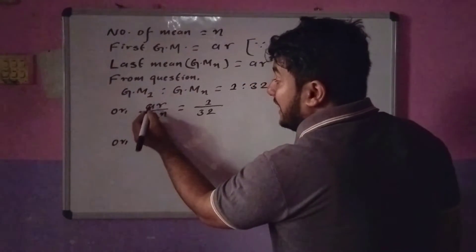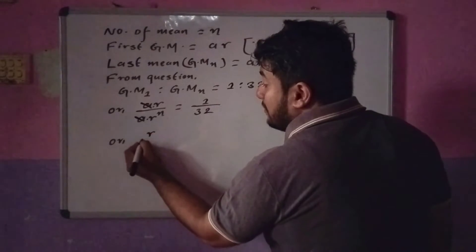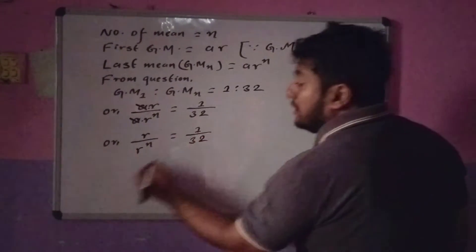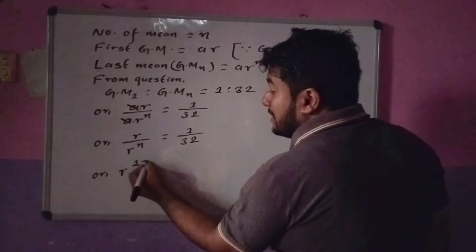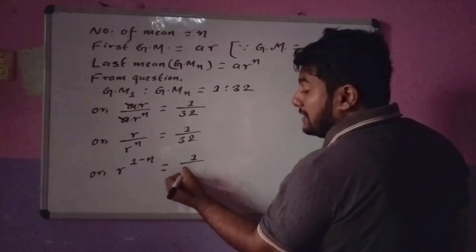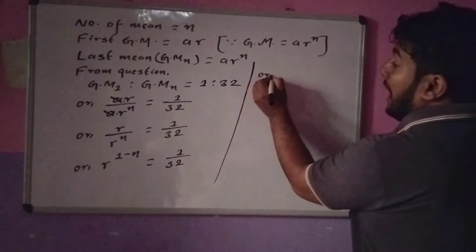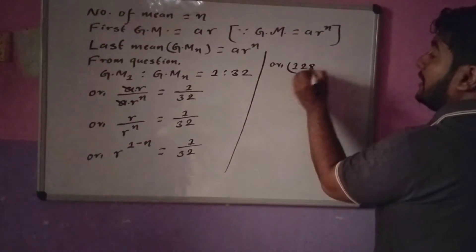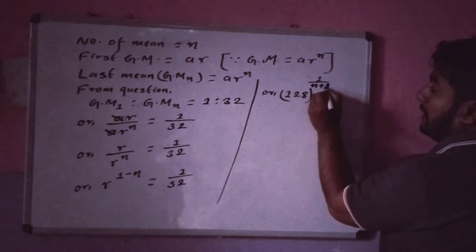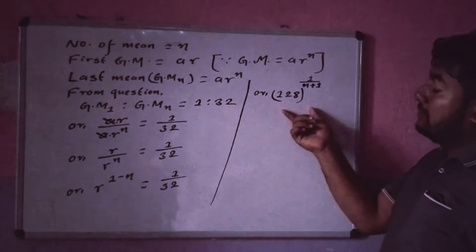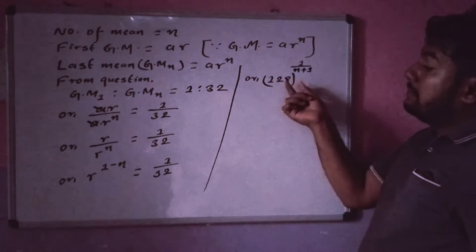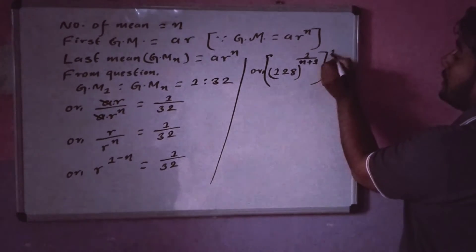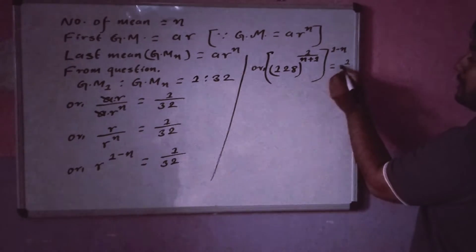The a terms cancel. We get r divided by r to the power n equal to 1 by 32, which simplifies to r to the power 1 minus n equal to 1 by 32.